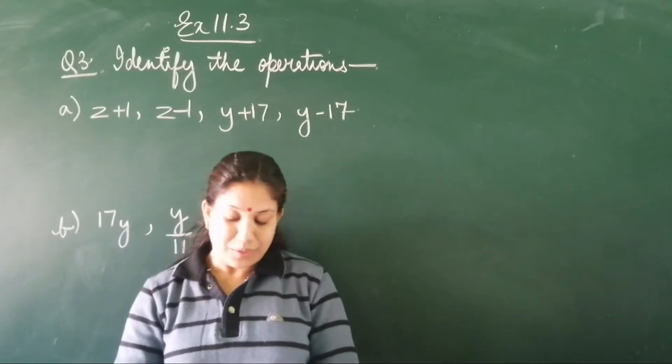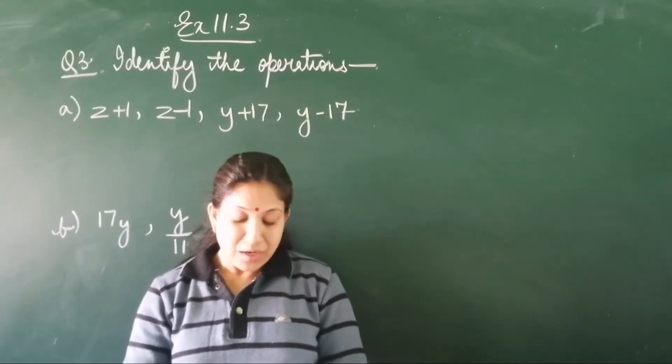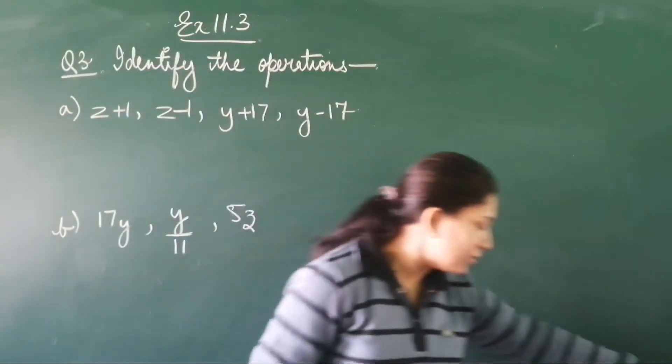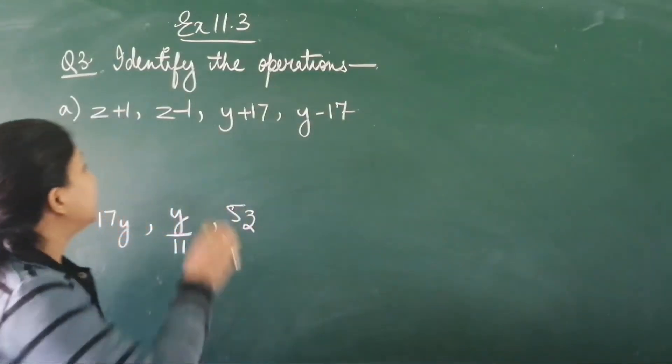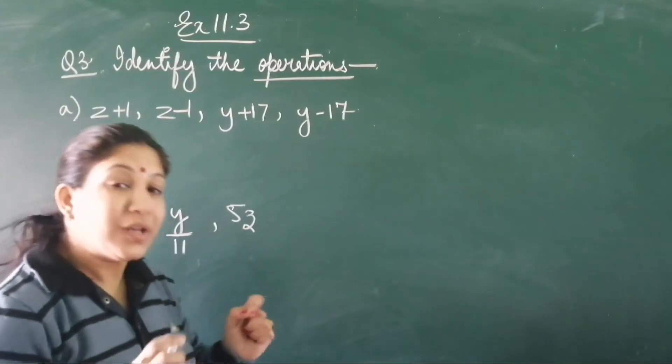The third question is: identify the operations in forming the following expressions and tell how the expressions have been formed. What do you understand from the question? You have to find out the operations. Now, what are operations?